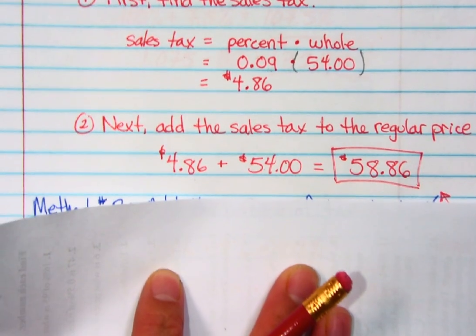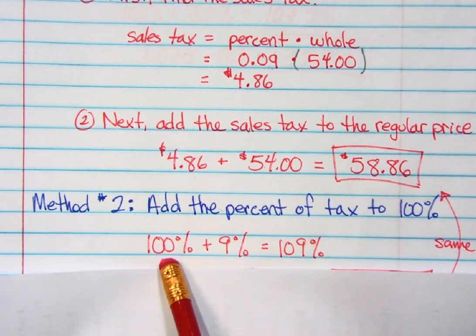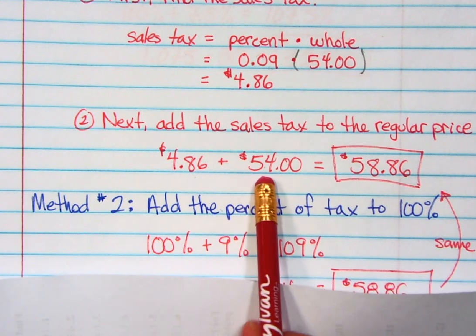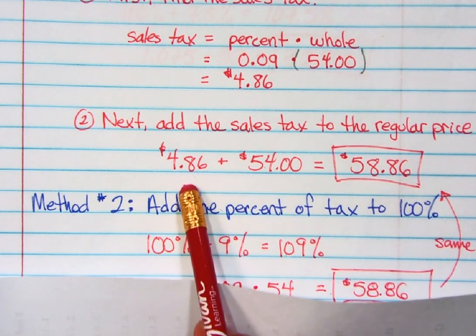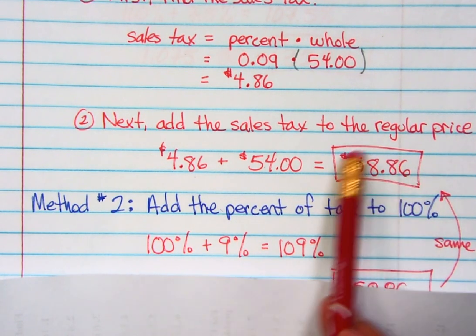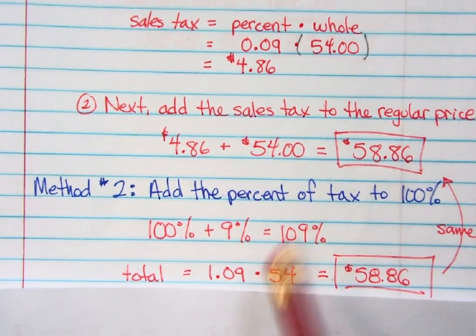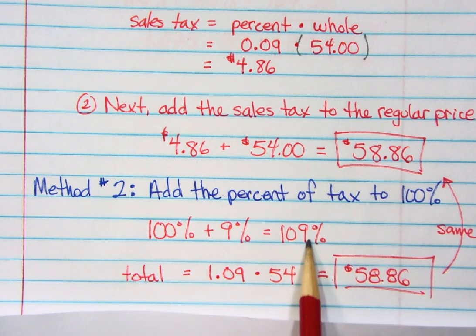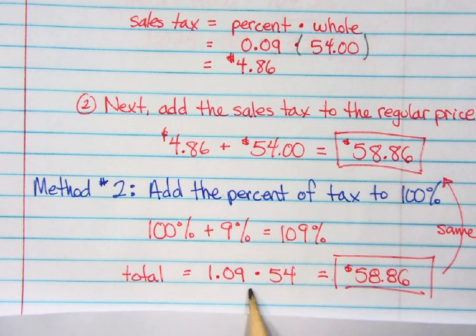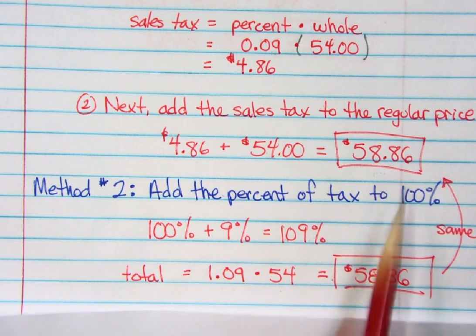Here's method number two. If 100% represents the entire price of the bat — which is $54 — and 9% represents just the tax part, then together, 109% represents the entire amount. Take 109%, change it to a decimal by moving it two places, and you get 1.09. Multiply 1.09 times $54, and you end up with $58.86 — the same exact amount as method one.